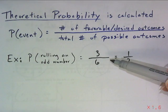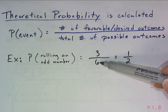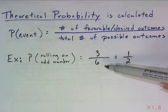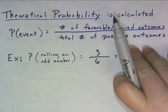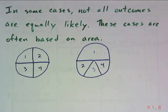Notice in this case that all of the different ways that my die could land are all equally likely. But that's not always true. In some cases, not all outcomes are going to be equally likely. These cases are usually based on some type of area model where each of the results, each of the sections, do not have an equal size. Therefore, their outcomes are not equally likely.